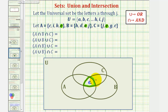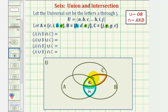Now let's focus on this region here, which contains the elements that are only in A and B. Looking at only set A and B, notice how element H is only in A and B, so H goes here. Next, let's look at this region — the elements that are only in B and C. Notice how J is the only element in both B and C, so J goes here.